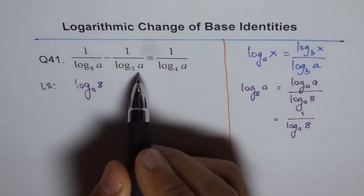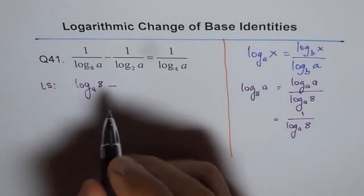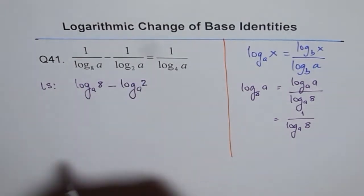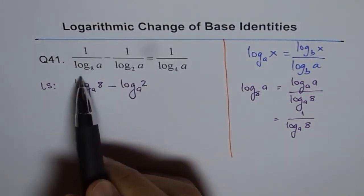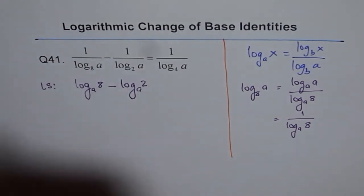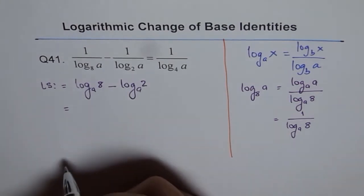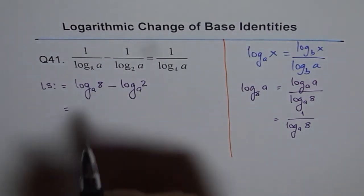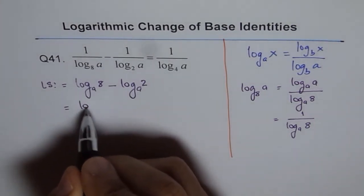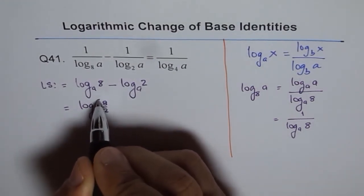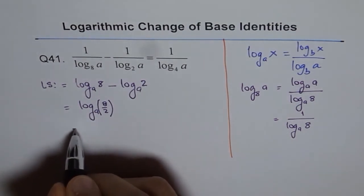That becomes the expression on the left side of equality. That is our left side. Now we can apply the quotient rule. If you apply the quotient rule, you get log base a of 8 divided by 2, which equals log base a of 4.